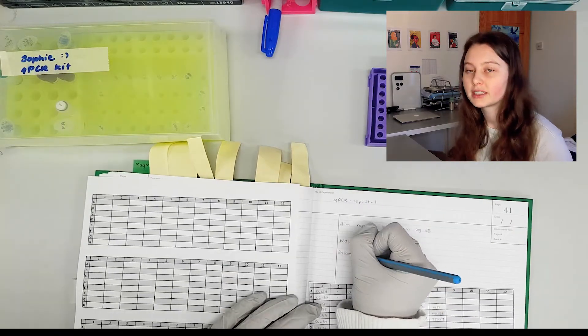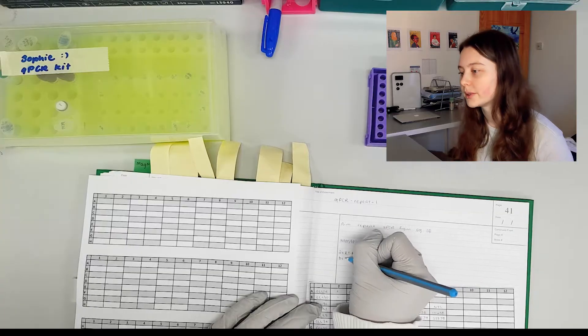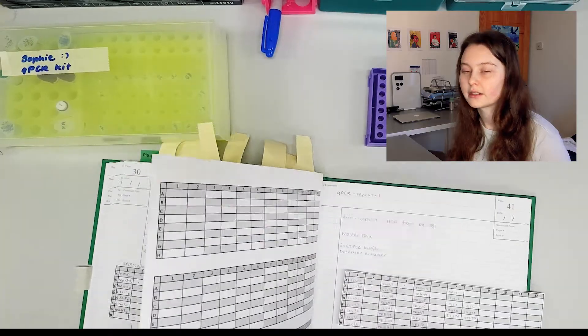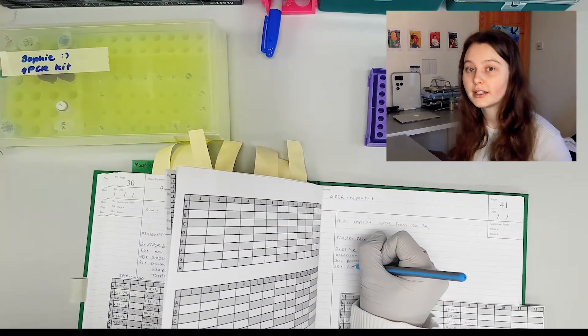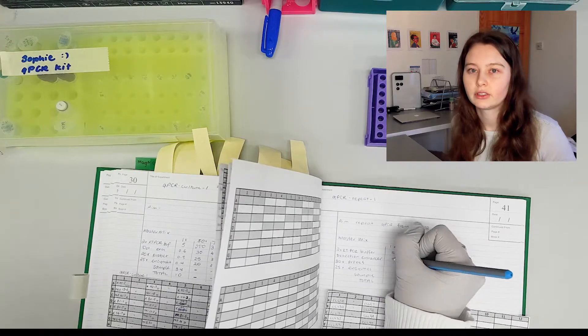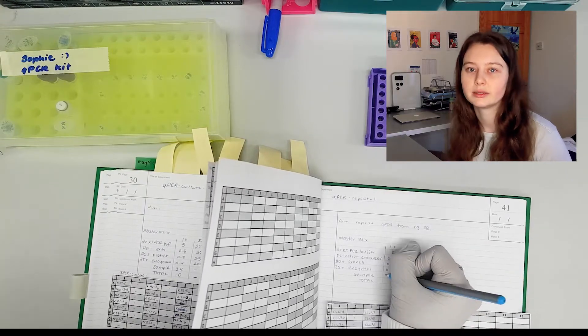So you can see I'm now writing out my master mix calculations. That's going to include my buffer, my enzymes, my probes. There are different things you can add depending on what you're trying to do, what concentrations you're using, or what kit you're using. So I don't want to give you exact volumes because it's going to be different for you.